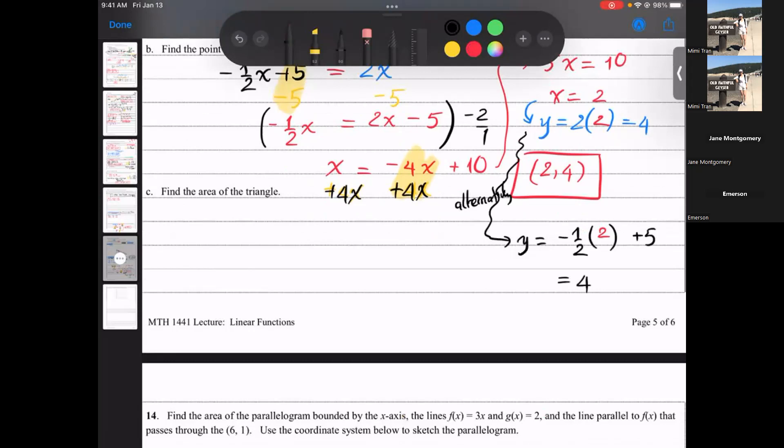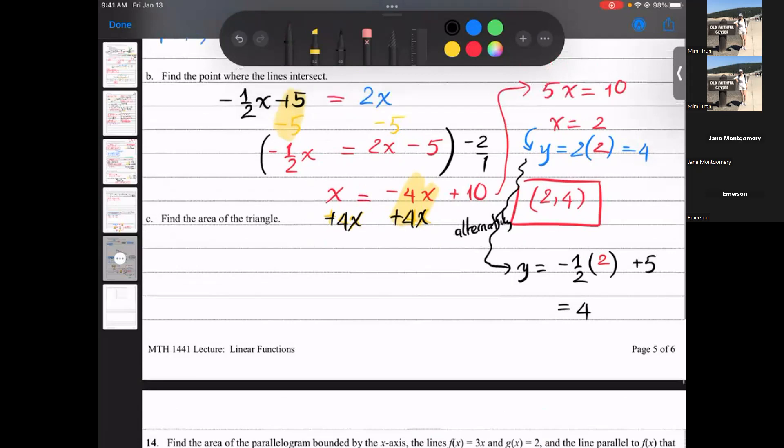y equals negative one half x plus 5 and x is 2. Negative one half times 2 is negative 1. Negative 1 plus 5 is 4. It's the same thing. You should have the same answer. That's why I say you can pick any function you like. In the beginning, we set them equal. So they equal. Do you have any questions for this one?